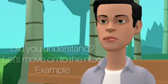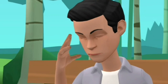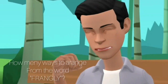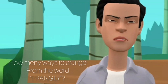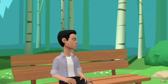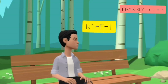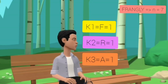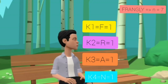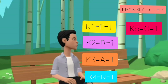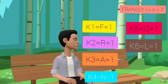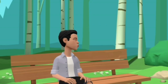Let's move on to the next example. How many ways can we arrange the letters from the word F-R-A-N-T-L-W? The number of letters n is seven. K1: letter F is one, K2: letter R is one, K3: letter A is one, K4: letter N is one, K5: letter T is one, K6: letter L is one, K7: letter W is one. The solution is as follows.